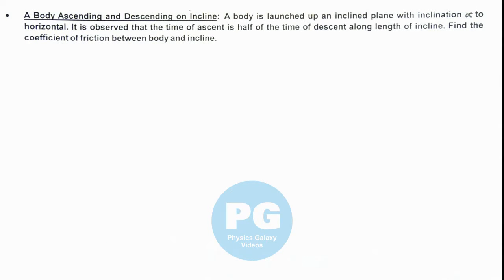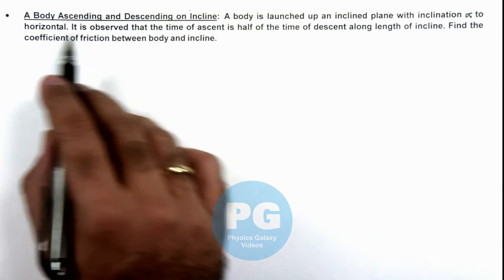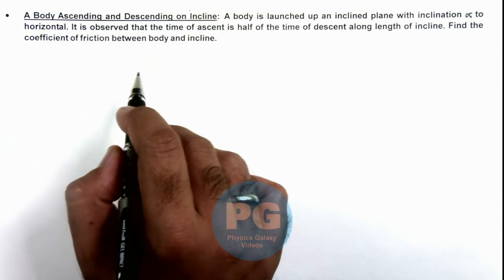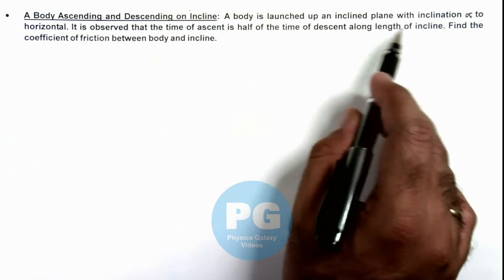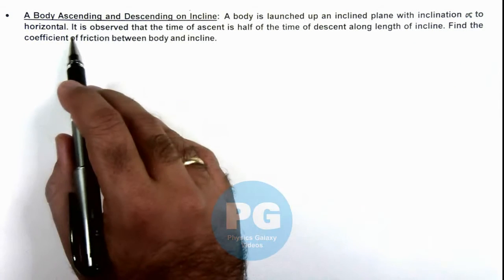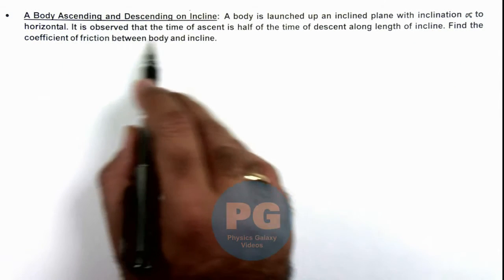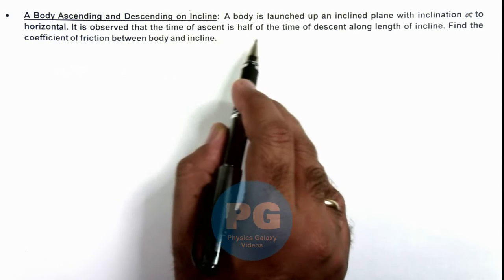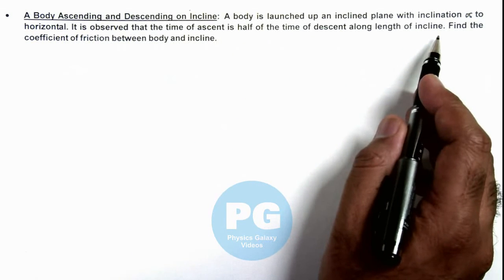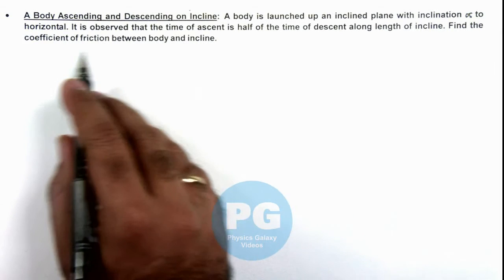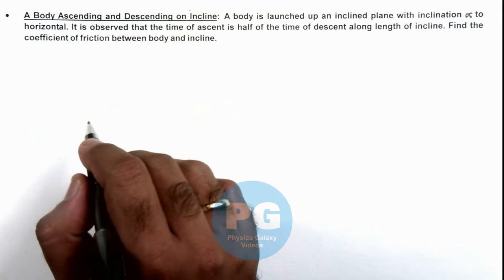In this illustration, we'll discuss a body ascending and descending on an incline. We are given that a body is launched up an inclined plane with inclination alpha to horizontal. It is observed that the time of ascent is half of the time of descent along length of incline, and we are required to find the coefficient of friction between body and incline.